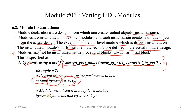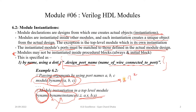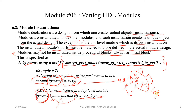The first word in the instantiation is the module name, then comes the instance name — a user-defined identifier — and then the port list. For example, port A should connect to X, B should connect to Y, and C should connect to J. X, Y, and J are signals in our top-level file. So if we have 'by_name.v' and 'top.v', in 'top.v' we instantiate the by_name module, connecting X to A, Y to B, and Z to C.